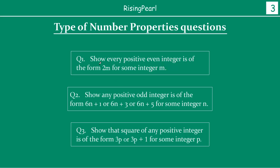The first type of question is: show every positive even integer is of the form 2m for some integer m. The second type is: show any positive odd integer is of the form 6n plus 1, or 6n plus 3, or 6n plus 5 for some integer n. And the last one is: show that the square of any positive integer is of the form 3p or 3p plus 1 for some integer p.